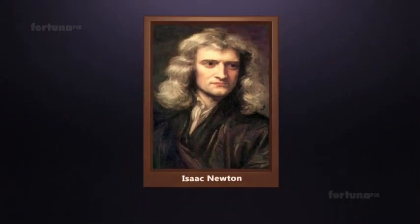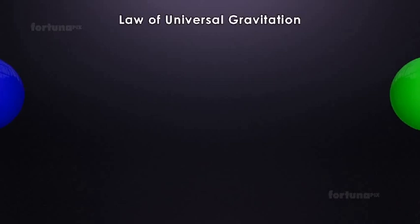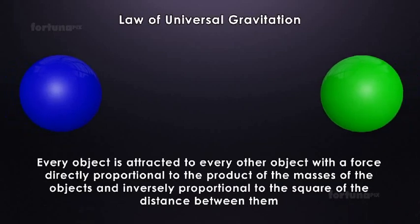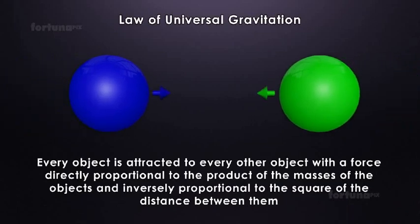In his Law of Universal Gravitation, physicist Sir Isaac Newton proposed that every object is attracted to every other object with a force directly proportional to the product of the masses of the objects and inversely proportional to the square of the distance between them.